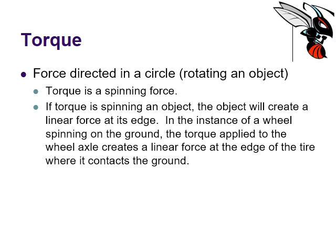So if the torque is spinning an object, the object will create a linear force at its edge. So you can imagine that as the edge of the tire. Where the tire contacts the ground, there's force at the edge of the tire. That's caused because of the torque, the spinning rotation of the motor.